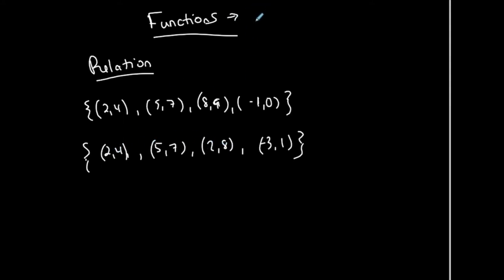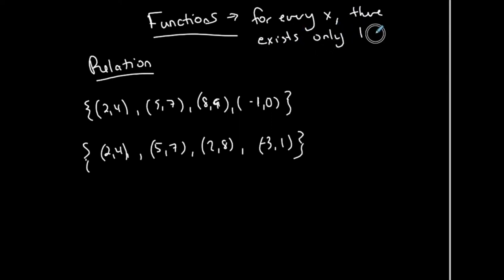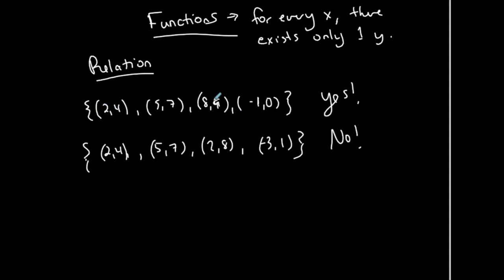A function is a special relation where for every x — or every input, since x is usually our input or independent variable — there exists only one y. So if I have a relation as a set of ordered pairs with a repeated x value corresponding to two y values, it goes against the definition of a function and therefore it is not a function. The first set is a function; the second is not, because it has a repeated x with different y's.